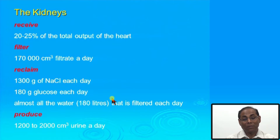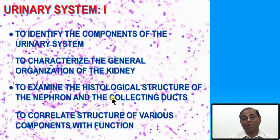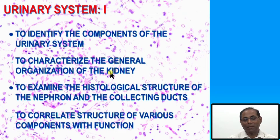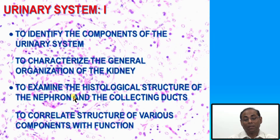The renal excretory function is very specific. In our first class we will identify the components of the urinary system and characterize the general organization of the kidney related to disease understanding. We will examine the histological structure of the nephron and collecting ducts — very important because kidney diseases may involve only the glomerular system or only the tubular system, making the pathobiology and disease process very different depending on which structure is involved.